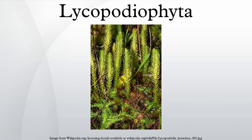The division Lycopodiophyta is a tracheophyte subdivision of the kingdom Plantae. It is the oldest extant vascular plant division at around 410 million years old. These species reproduce by shedding spores and have macroscopic alternation of generations, although some are homosporous while others are heterosporous.